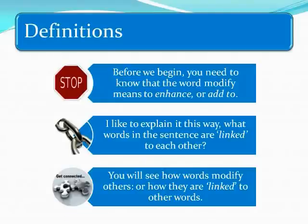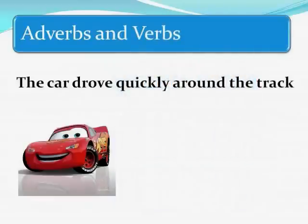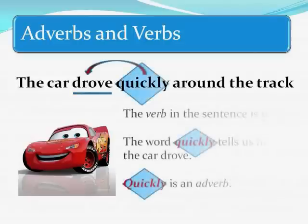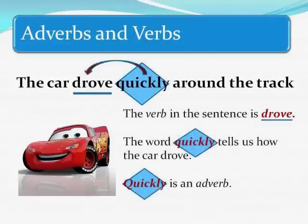I like to explain it this way: what words in the sentence are linked to each other? You will see how words modify others, or how they are linked to other words. Adverbs and verbs — 'The car drove quickly around the track.' The verb in the sentence is 'drove.' The word 'quickly' tells us how the car drove. 'Quickly' is an adverb.